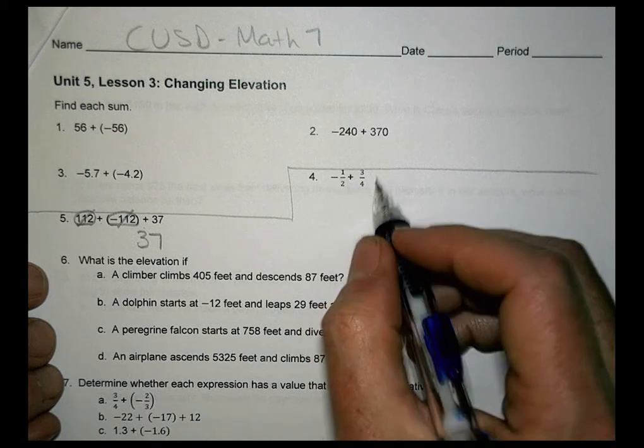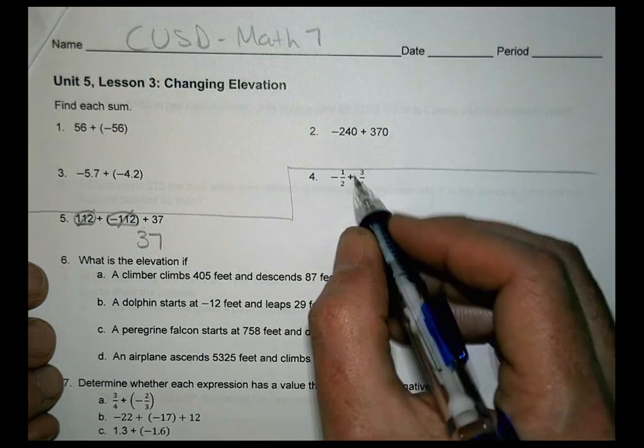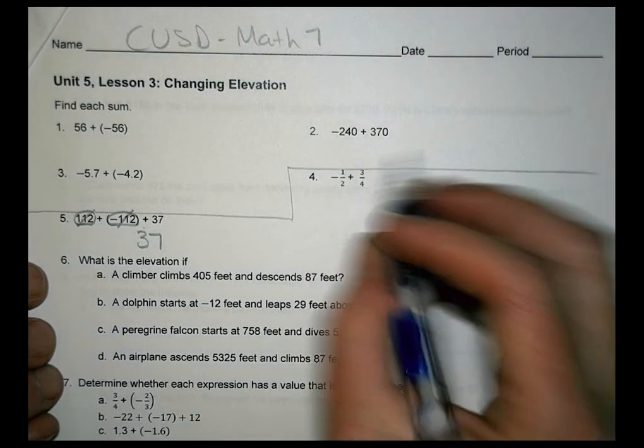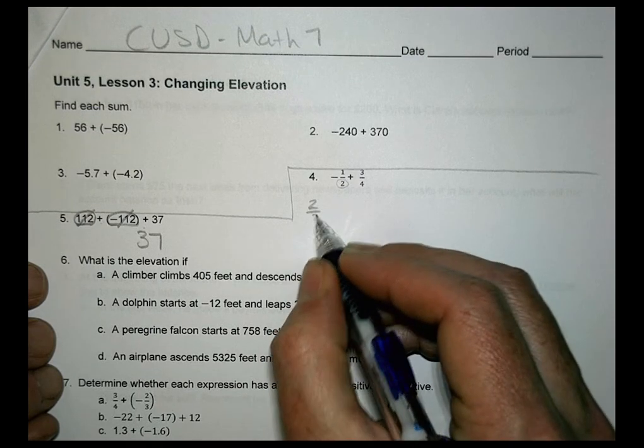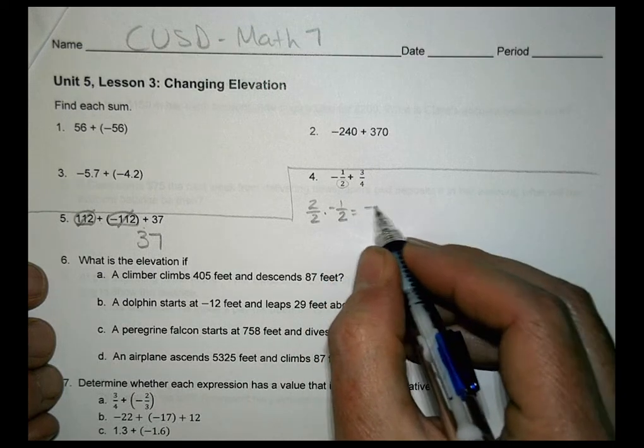If you look at number 4, we have two fractions. We have a negative half and a positive 3 fourths. When we have fractions we want to add or subtract, whether it's positive or negative, we want to have a common denominator. So I'm going to go ahead and multiply negative 1 half by 2 over 2, so I end up with negative 2 over 4.